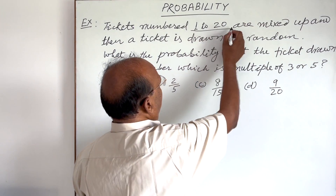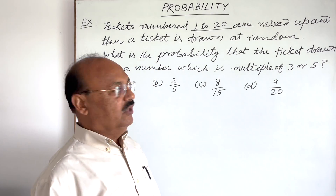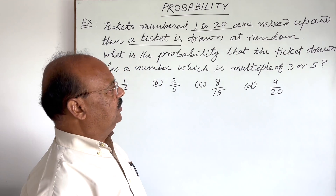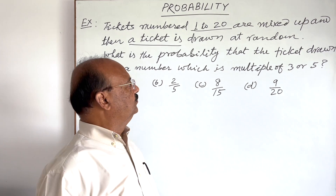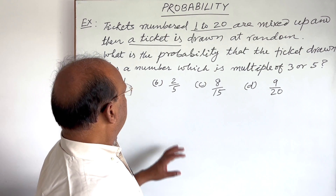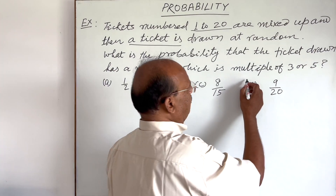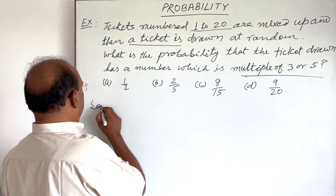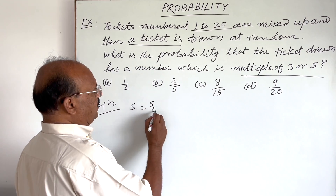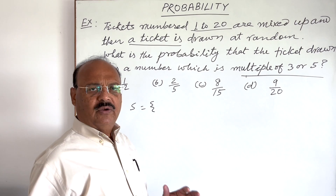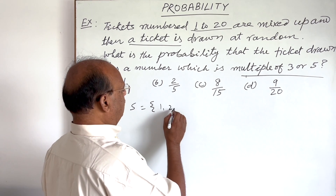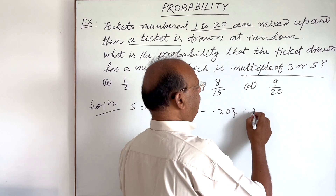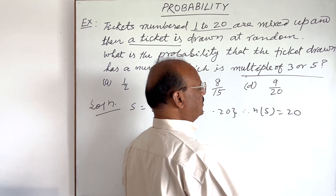Total number of tickets is 20, numbers 1 to 20, and one ticket has been drawn. So the sample space consists of 1, 2, 3, 4 up to 20. Therefore, the number of elements in this sample space is 20.